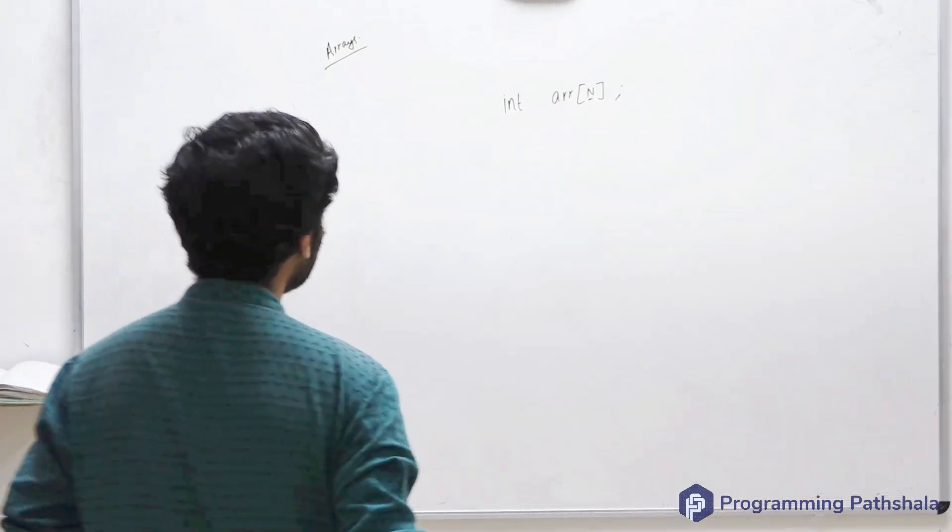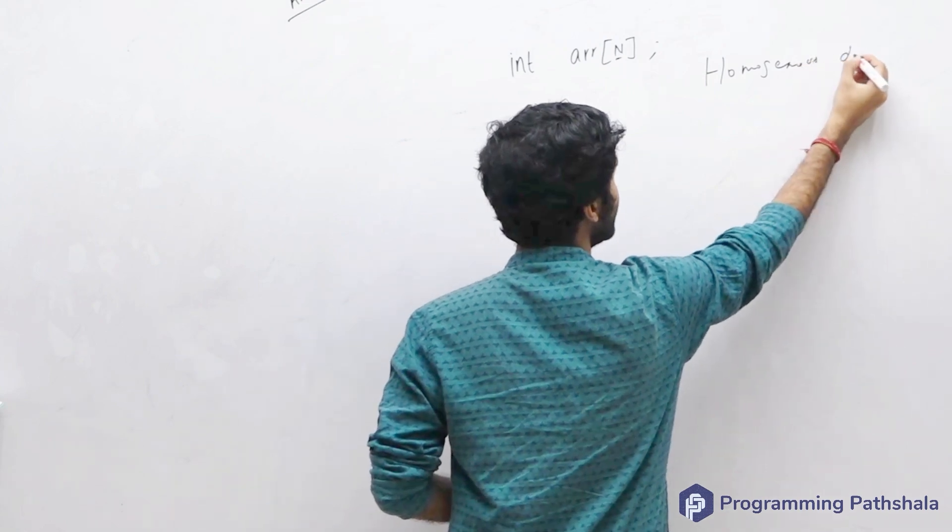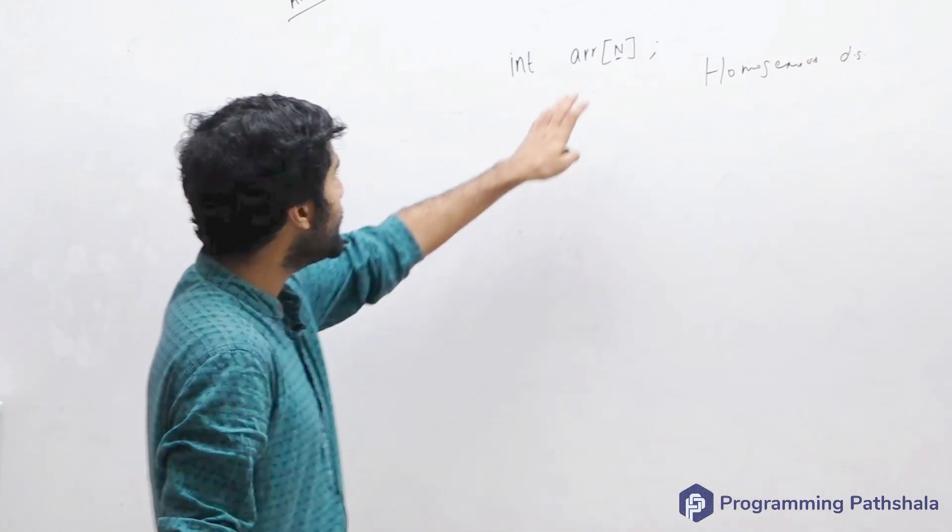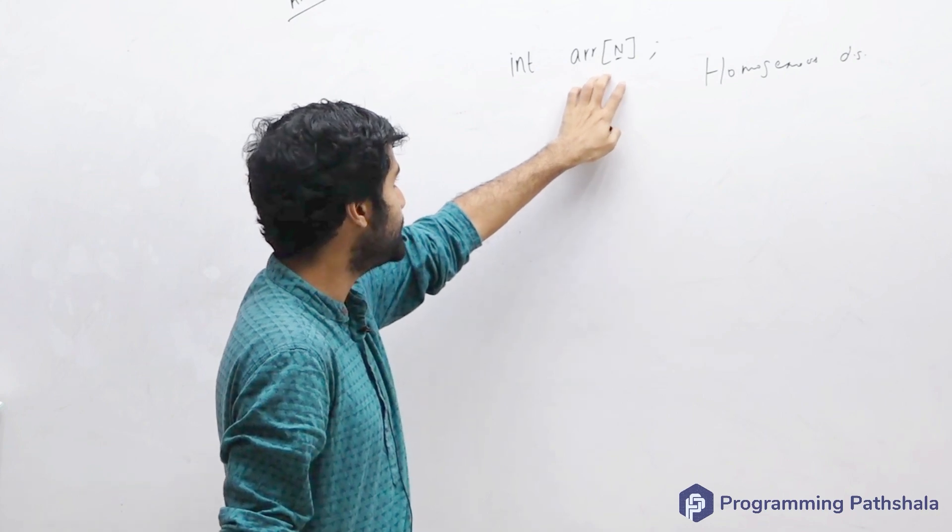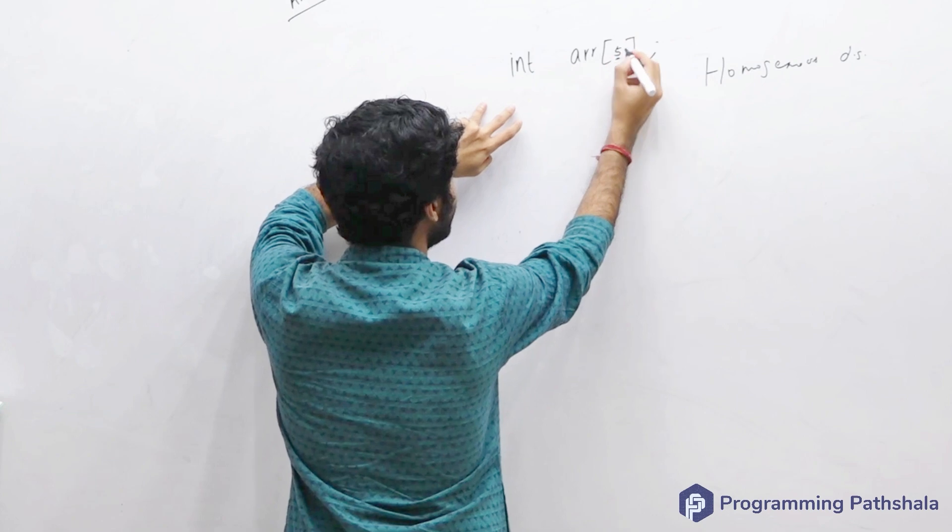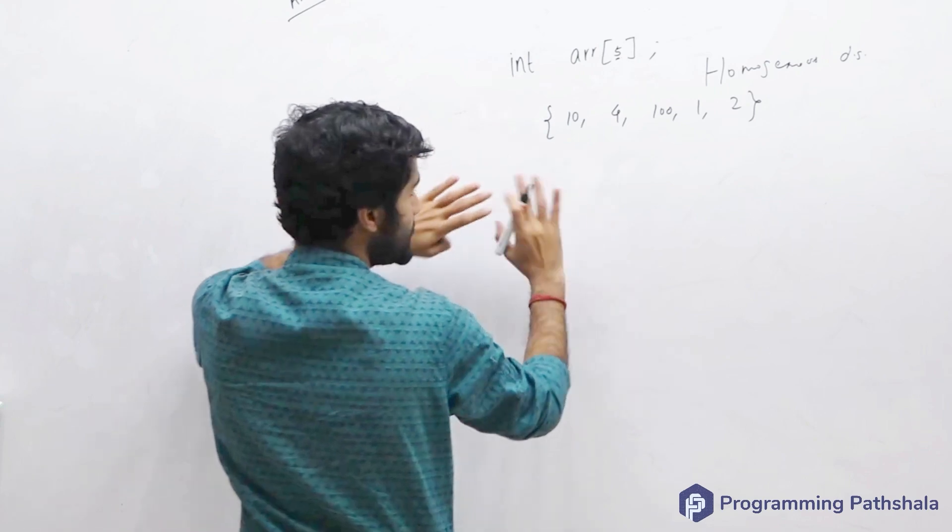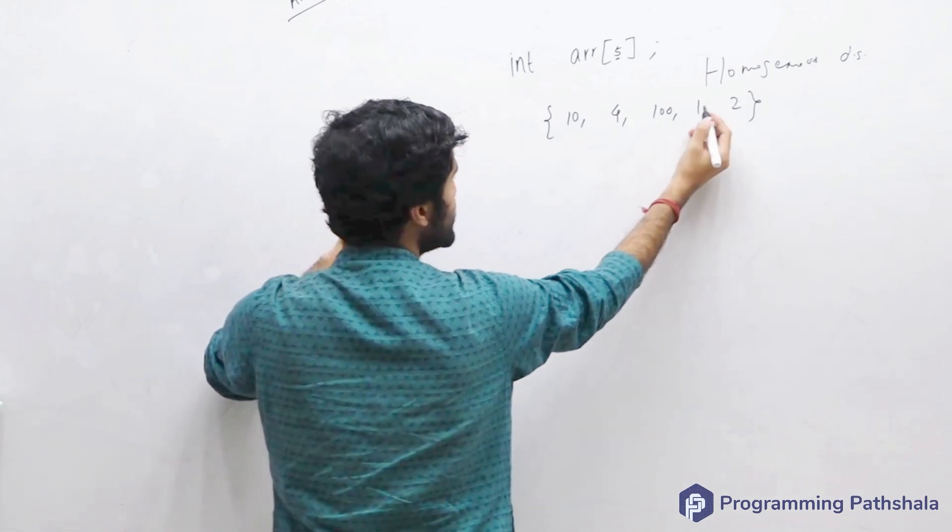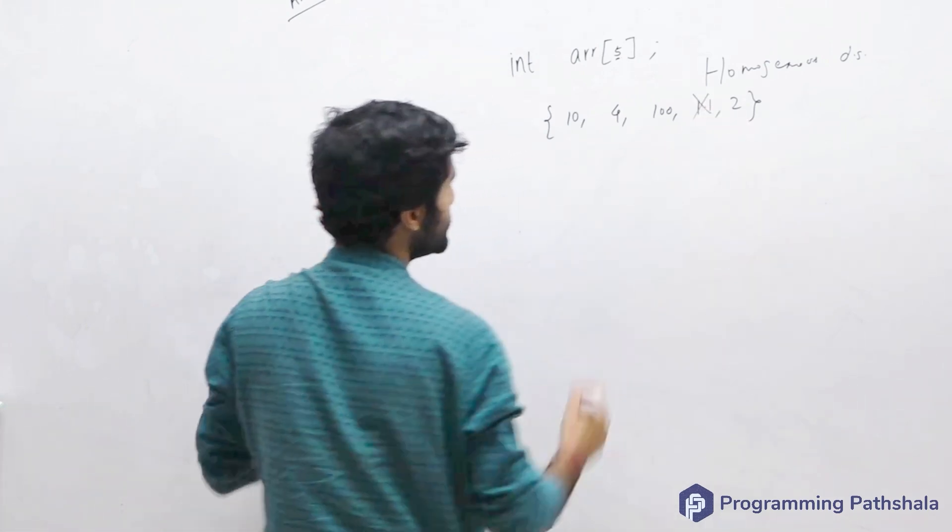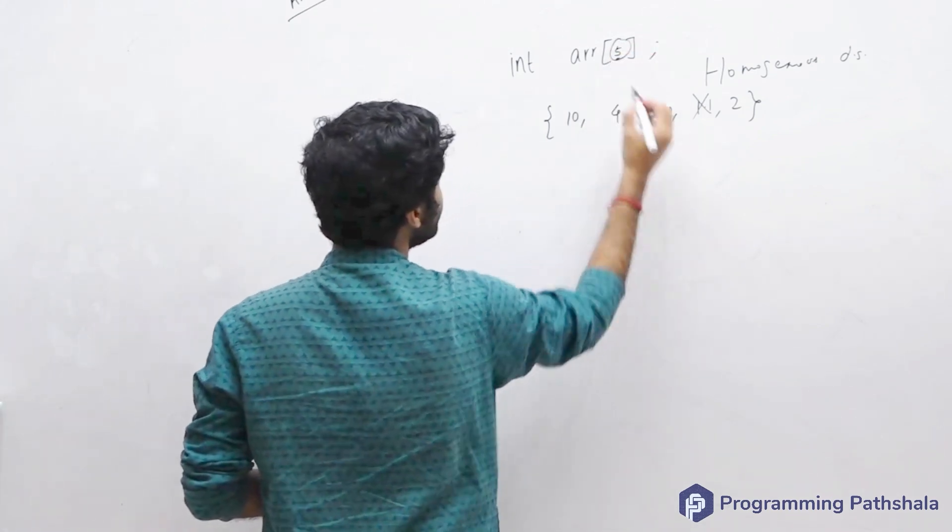How is it different from any other data structure? An important attribute is that this is a homogeneous data structure, meaning it will contain elements of a particular type. If this is an integer array with size 5, it can have 5 integers only. It's not possible to have few integers and few floats. The second important attribute is that the size is fixed.